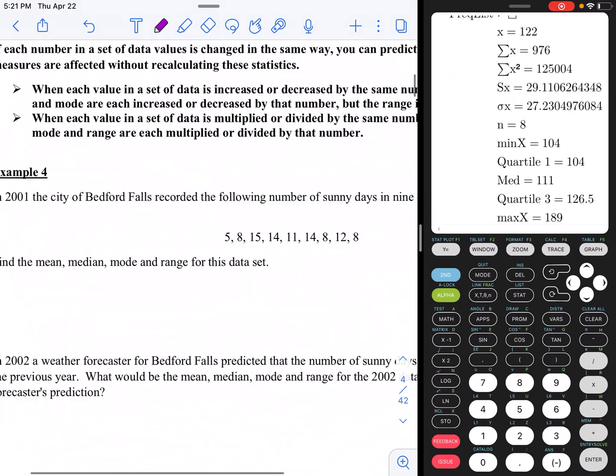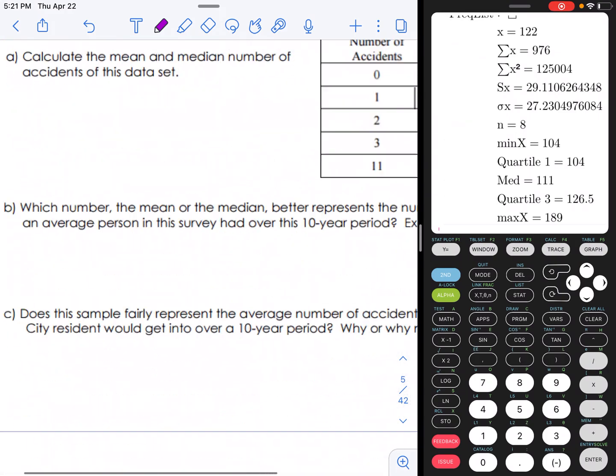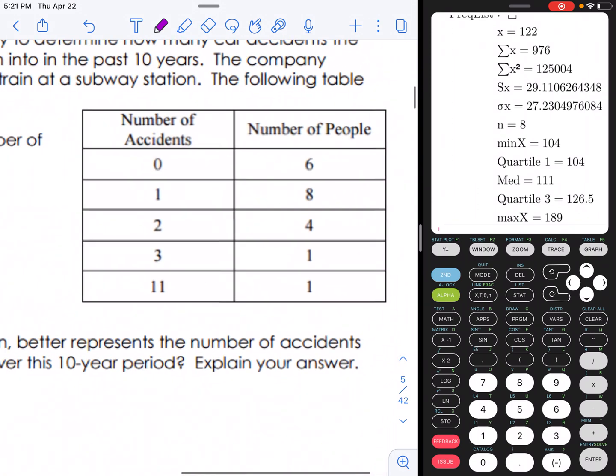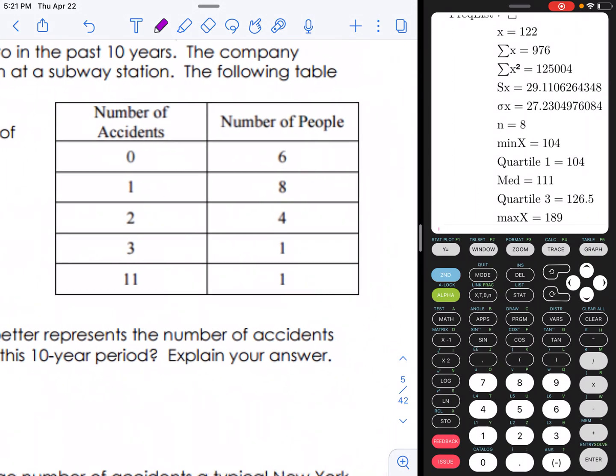Now, earlier in class, what if we have a table? Okay, so a table is actually going to usually give us a frequency chart where all the information is organized, but instead of it written out as a list, it's written out as a table. So we would enter this table in just the same way we would enter in the list of data.